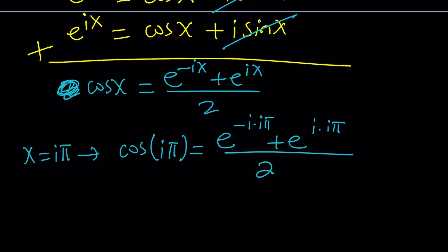As you know, i times i is i squared, and i squared is equal to negative one. Remember that? We talked about this before, right?